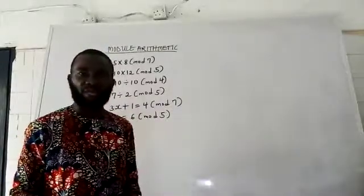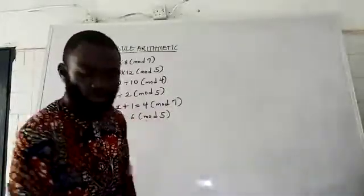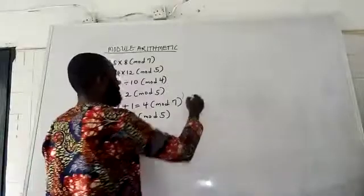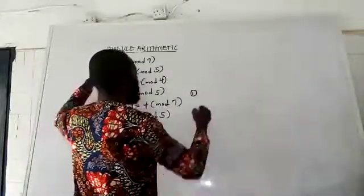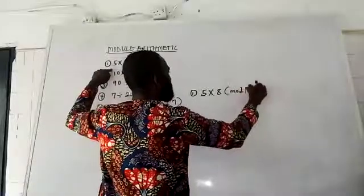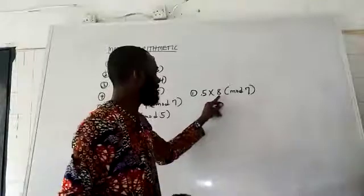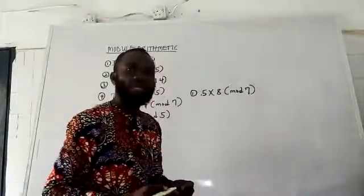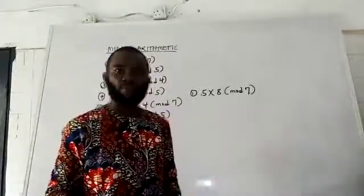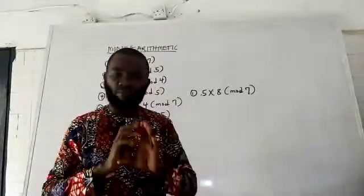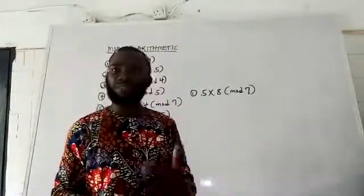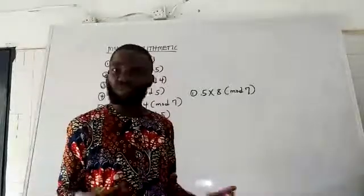Let's take them one after the other and solve the questions. We will solve all of these using the given modulus. For number 1, I have 5 multiplied by 8 mod 7. In mod 7, there are 7 numbers which are 0, 1, 2, 3, 4, 5, and 6. The first thing is to perform the multiplication, then divide the answer by the modulus, and the remainder becomes our result.